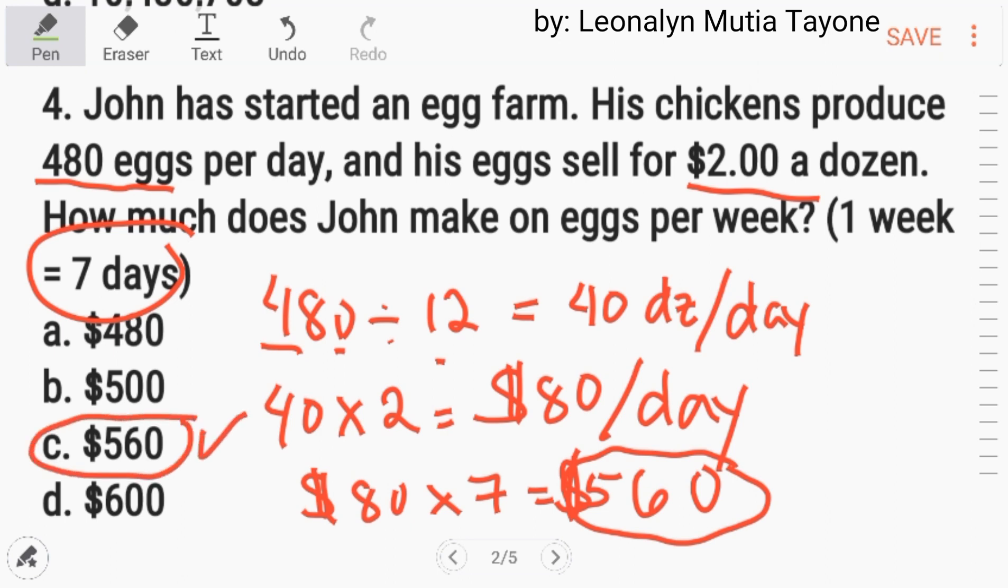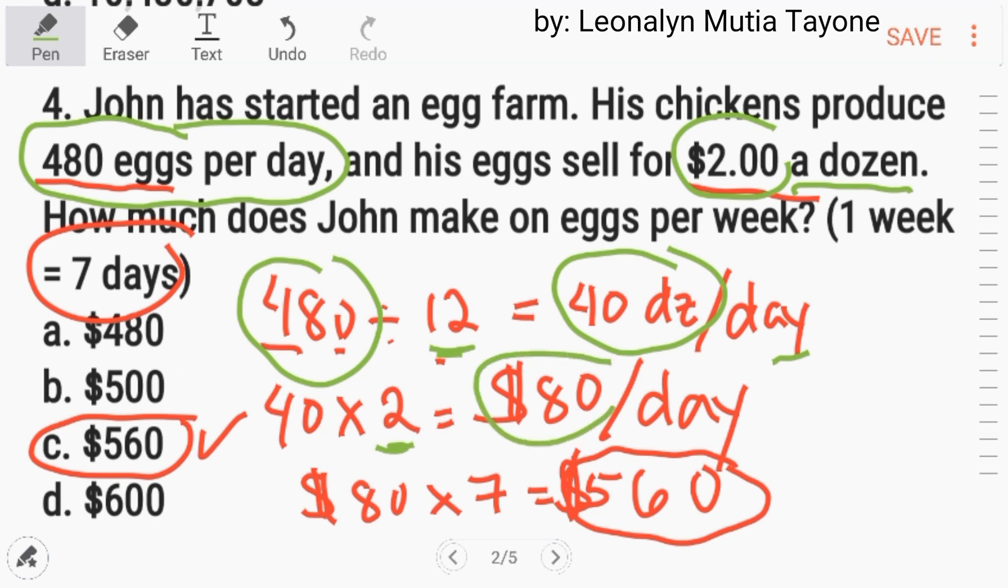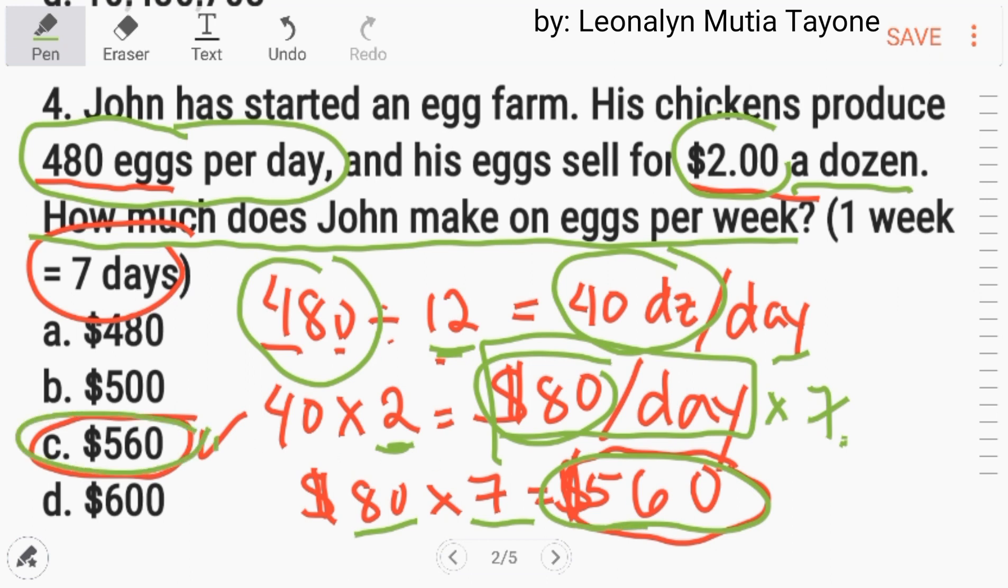Again, uulitin ko lang, although simple word problem lang ito. 480 eggs per day. Ito yung 480 eggs. Per dozen man tayo, so, i-divide muna natin siya ng 12. Bali, in a day, naka-40 dozen siya. Ngayon, ang per dozen, $2. So, kaya i-multiply natin ang 2. 40 times $2, you have $80. $80 per day. I-multiply natin itong $80 by 7. Kasi one week man ang tanong, how much does John make on eggs per week? Kaya i-multiply natin ang 7. So, 80 times 7, and that is 560. Kaya letter C ang sagot dito.